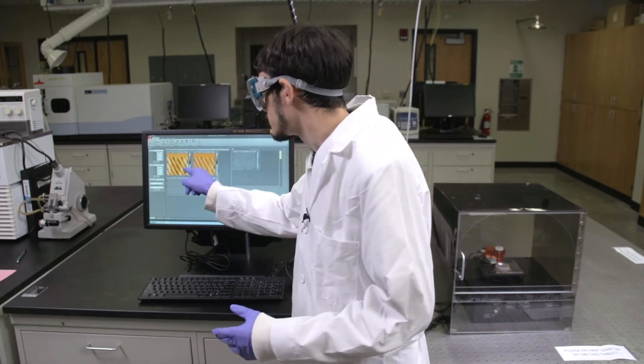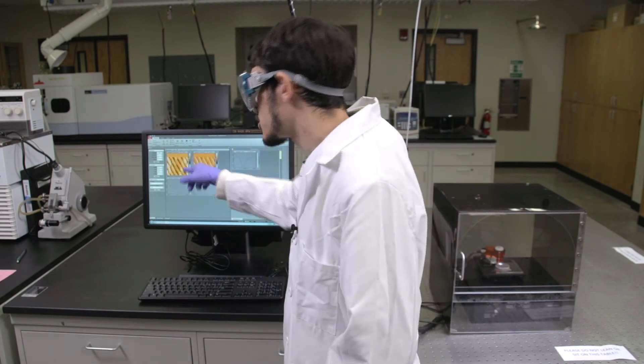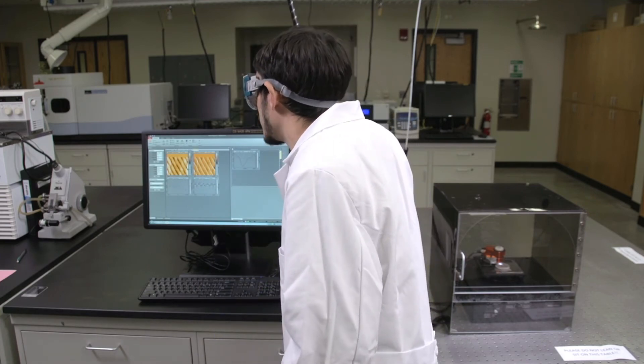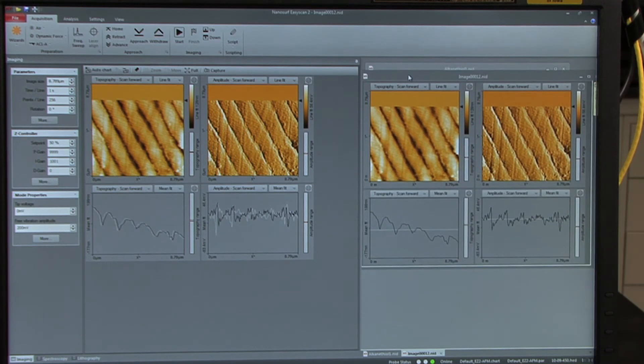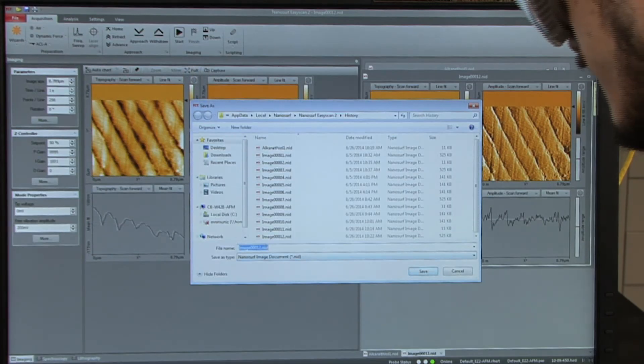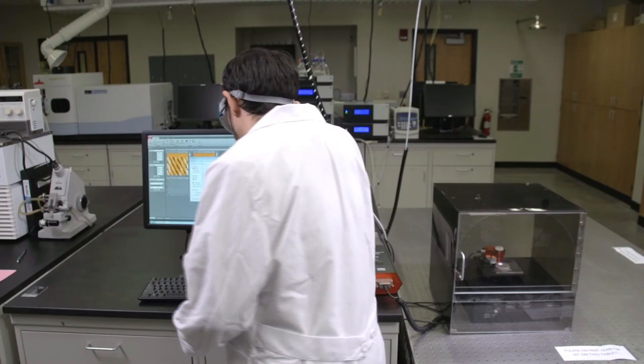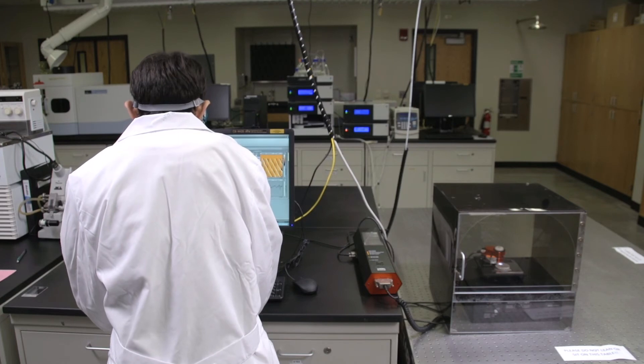Also, you'll want to make sure that you save an image of the actual AFM image itself, and in order to do so, click capture, and an image will pop up as an NID file. You'll want to save this NID file by going to file, save as. And again, appropriately titling the image according to which alkane thiol you've imaged.